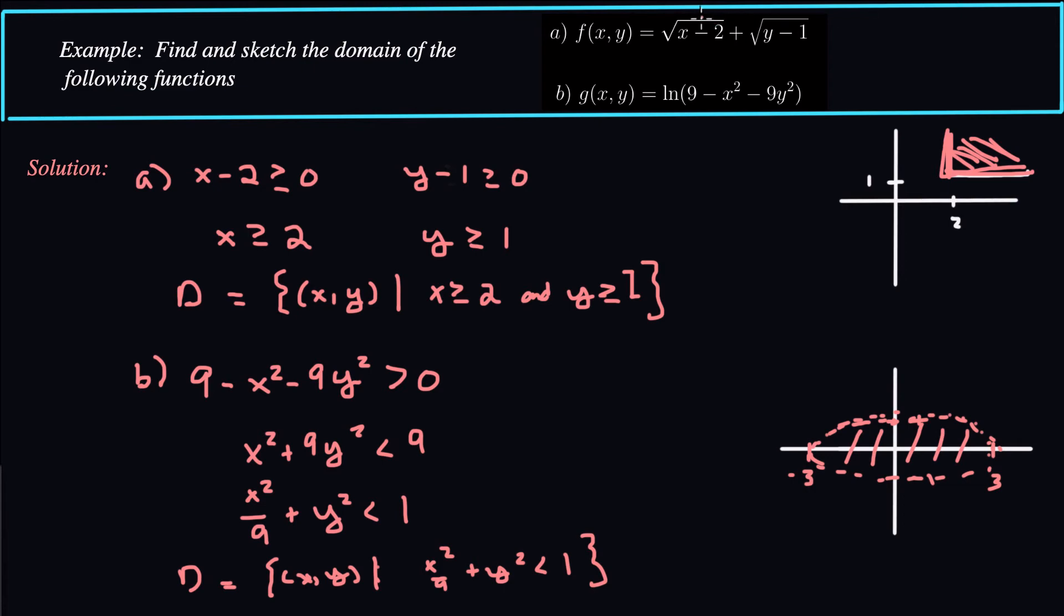So for radicals, we have to make sure that the radicand is positive or at least non-negative. We have to make sure there are no zeros in our denominators anywhere. We have to make sure log inputs are positive. Just all the natural things, all the things that you normally do with functions. You just scale those up here. And this is kind of a quick application of how you do that.